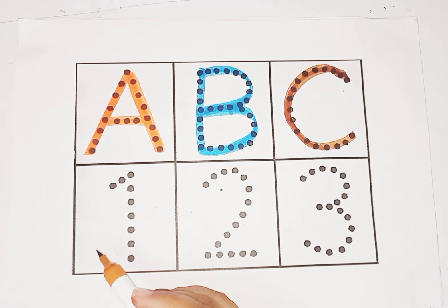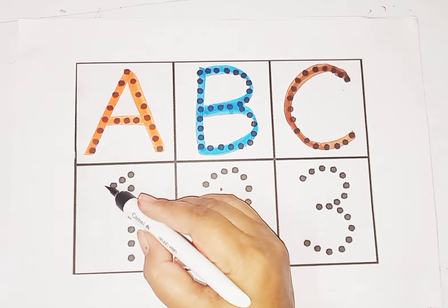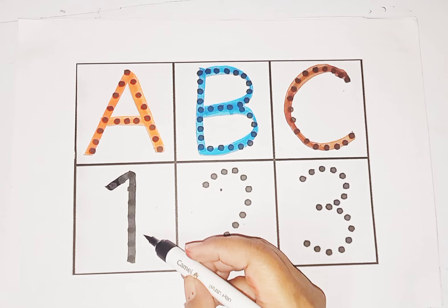Let's see. Now we learn number 1, 2, 3 and their spelling. Black color. Number 1. O-N-E-1.